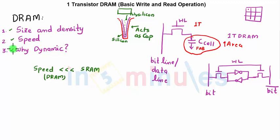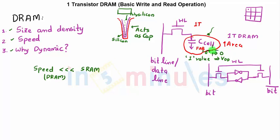Now, why do we call it a dynamic RAM? In this DRAM, the memory value is nothing but the charge stored on the capacitor. If this capacitor is charged to VDD, it stores a logic value 1; if discharged to ground, it stores a value 0. The dynamic nature means that when the charge is stored across the capacitor and the pass transistor switch is turned off, there are problems called charge leakage due to different leakage currents, which will tend to lose the value of this charge and eventually lose the correct stored value.